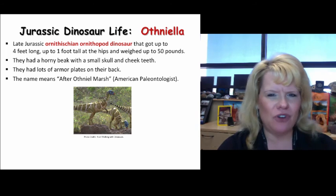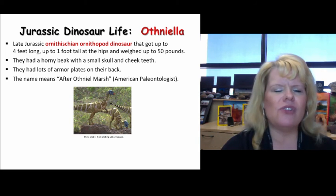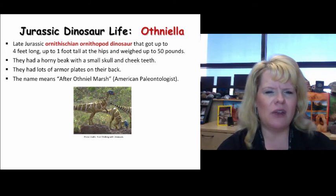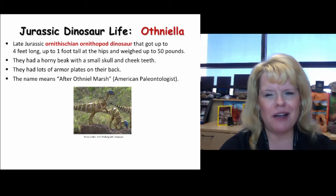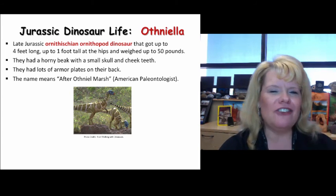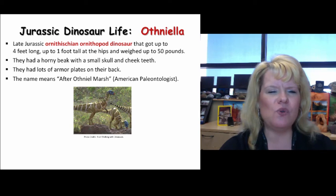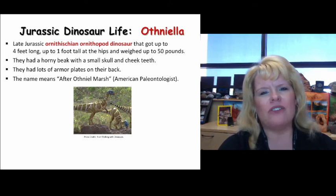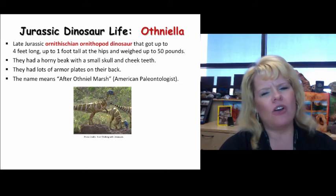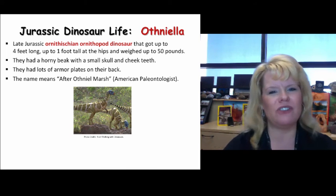Othnielia is named after a famous paleontologist who discovered some very important fossils. This is an Ornithischian dinosaur that was an ornithopod — and ornithopods are bipedal. These guys got up to about 4 feet long and 1 foot tall at the hips, weighing about 50 pounds — very tiny ornithopods. They had a very horny beak, a little tiny skull, lots of cheek teeth designed to grind food, and armor plates on their back. The name references the paleontologist Othniel Charles Marsh, who named a series of species.